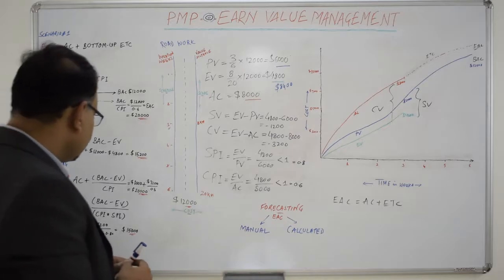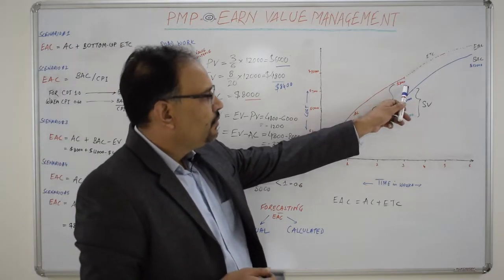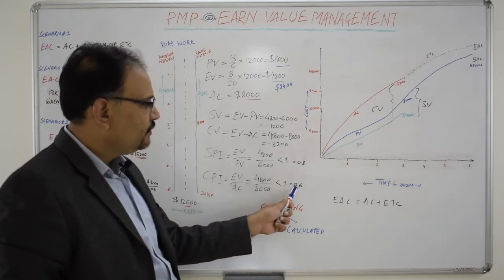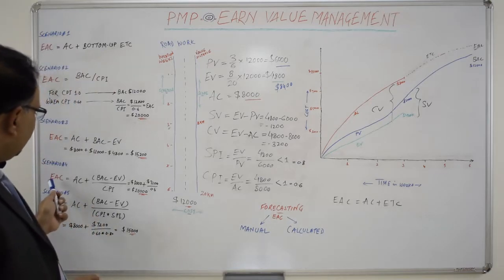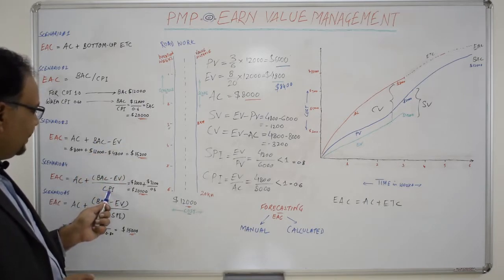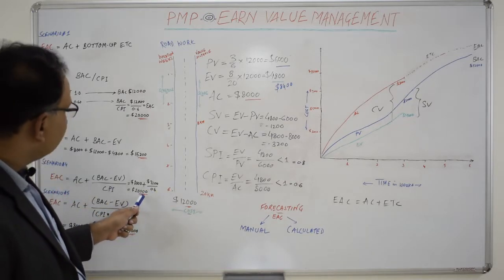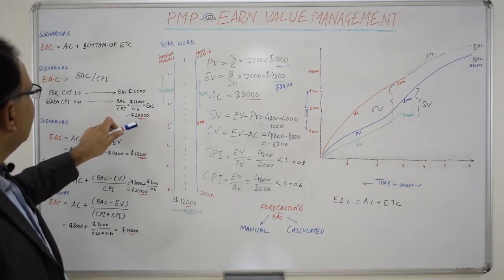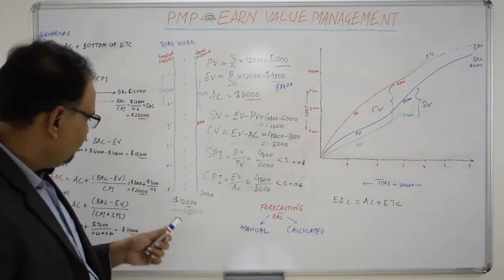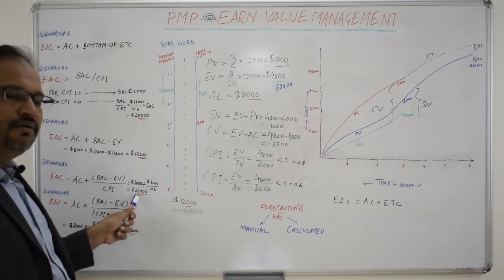In Scenario Number Four, the project manager realizes that after this point there will be some cost overrun for the remaining work, and that may or may not be at the rate of 0.6. So in that case the formula would include the remaining work component divided by the CPI. In our example it is divided by 0.6, and the EAC value comes out to be $20,000, which is exactly the same as in Scenario Number Two. But the CPI could be any different for the remaining work — it could be 0.3 or it could be 1.2 — and then the EAC would have a different value altogether.